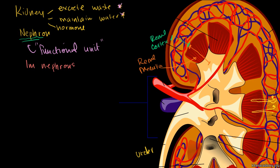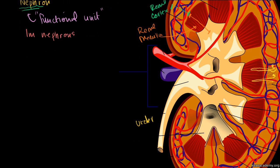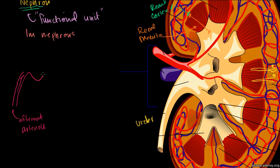Let me draw a nephron. I'm going to start with the blood flow. Blood comes in via an arterial capillary — this is called the afferent arteriole. Then it goes into this big winding structure called the glomerulus.